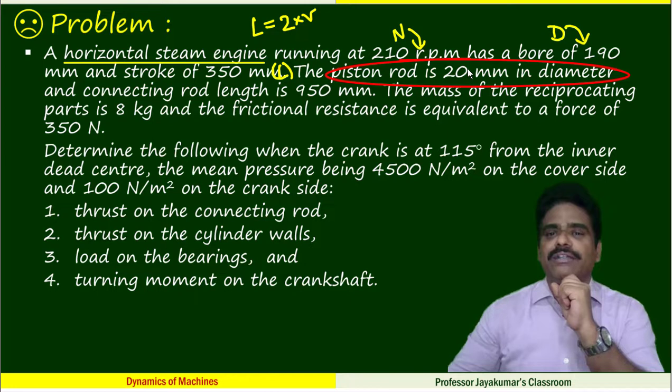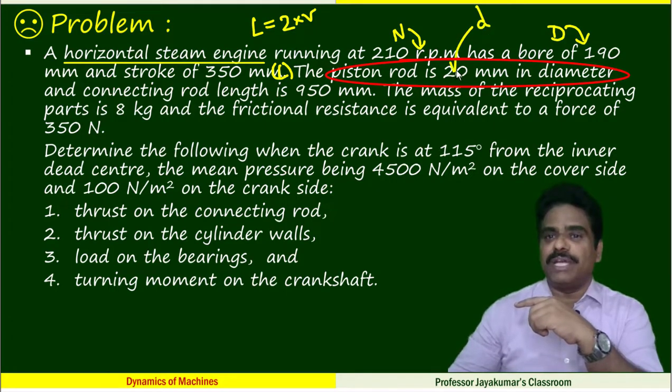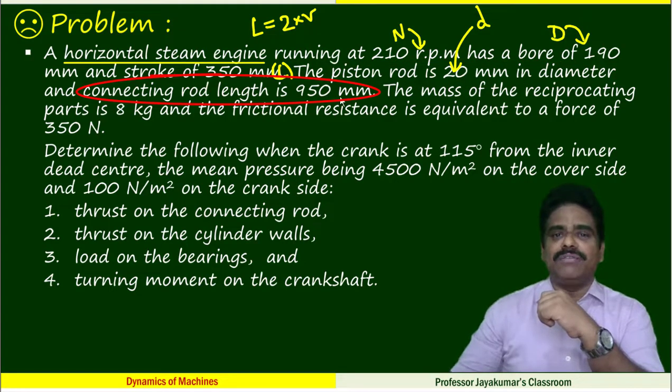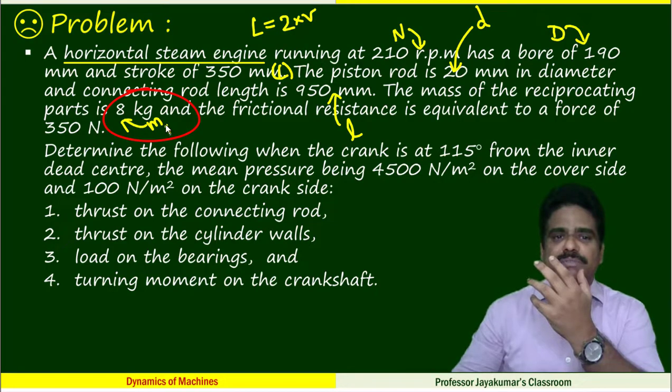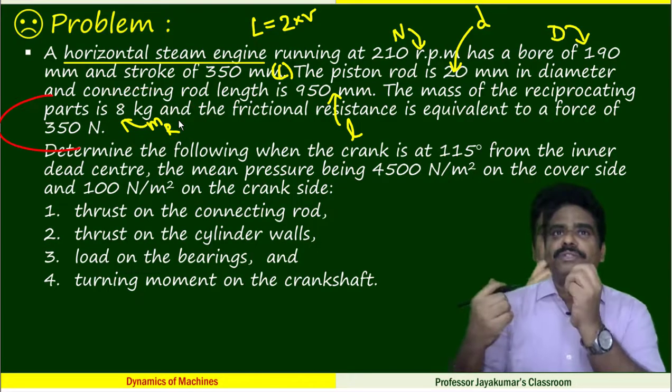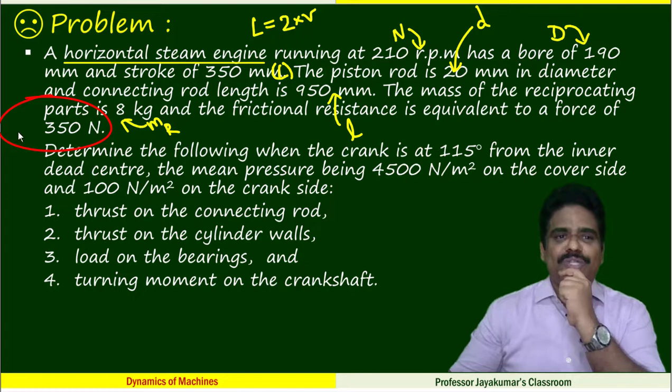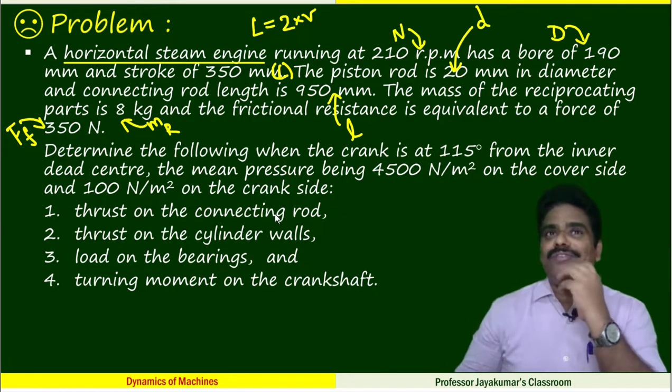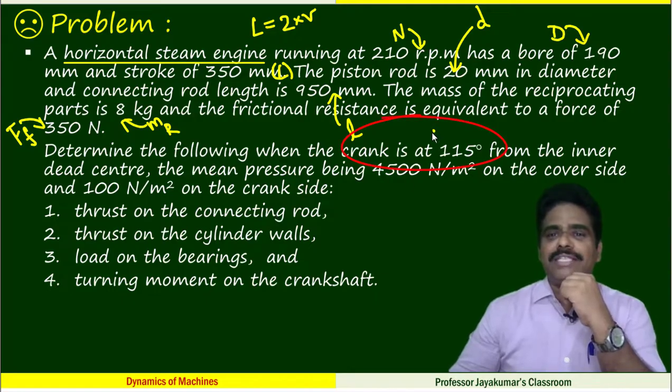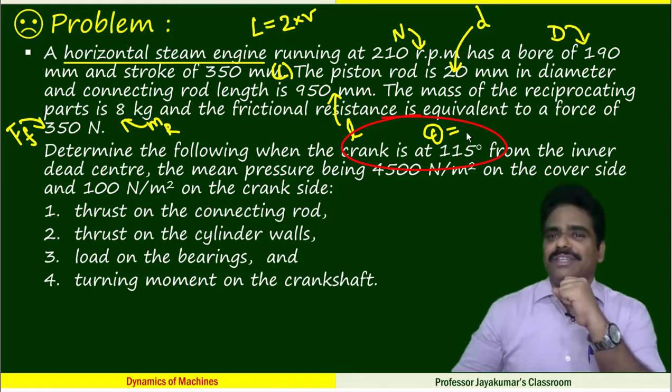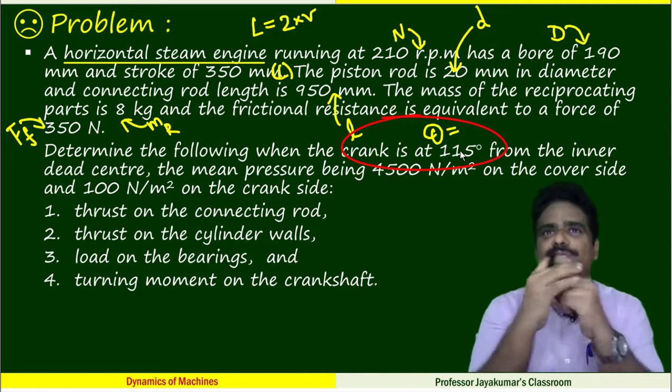They are given piston rod diameter, not piston diameter. Piston diameter is already given as bore. This is piston rod diameter which I represent by small letter d. Connecting rod length L is given. The mass of the reciprocating parts, mass of the piston MR is 8 kg. Frictional resistance when the piston moves, frictional force FF is given. All the force values are changing depending upon the position of the crank. That's the reason why they are asking you the answer at one particular crank position. When θ equals 115 degrees from IDC, they need the various forces at that particular position.